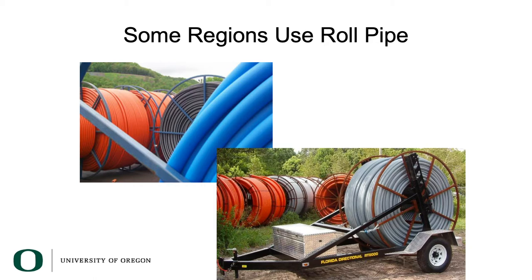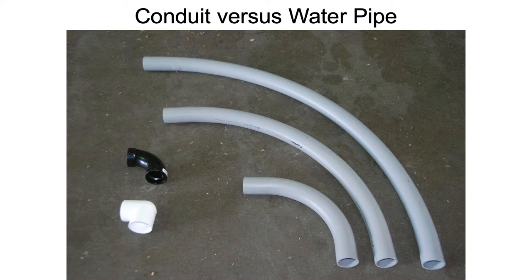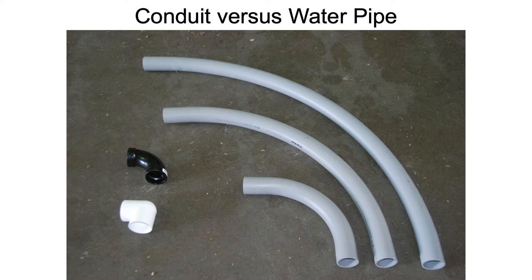Here we're looking at the difference between water pipe and pipe specifically built for electrical conductors — which fiber optic cable handles much like. The white one on the left is used to transport water here in the United States. Water flows fine around a really tight 90-degree bend, but if you were trying to pull a cable around that, it would be very difficult.